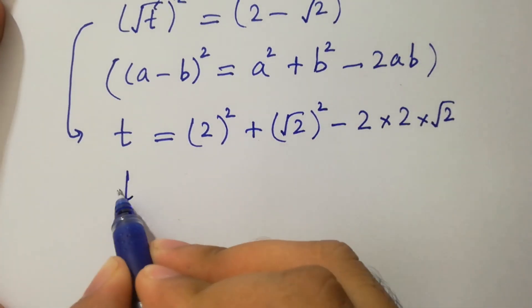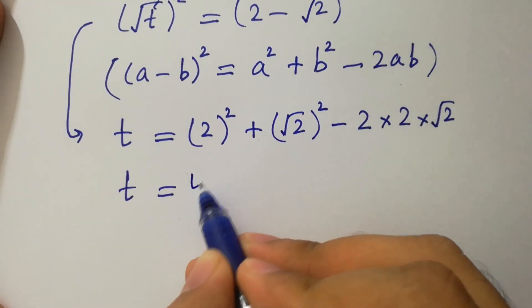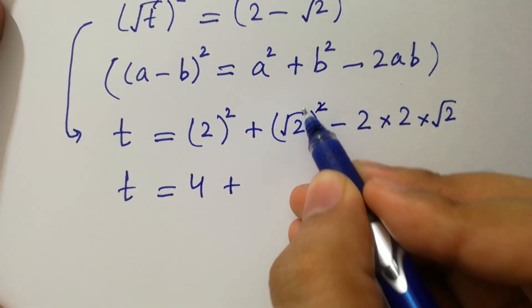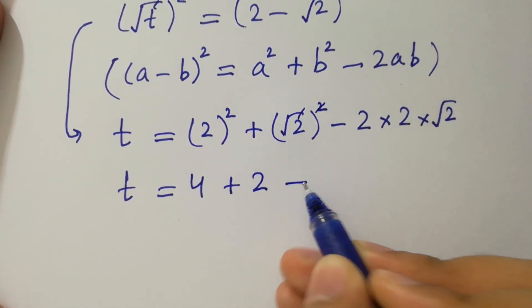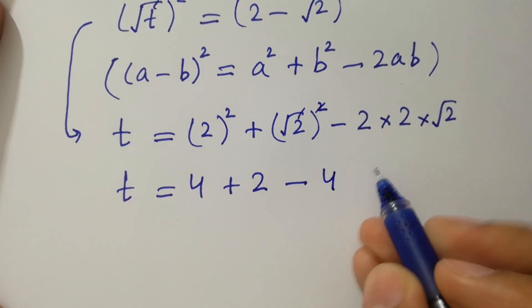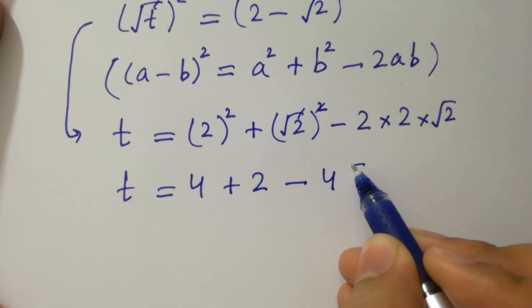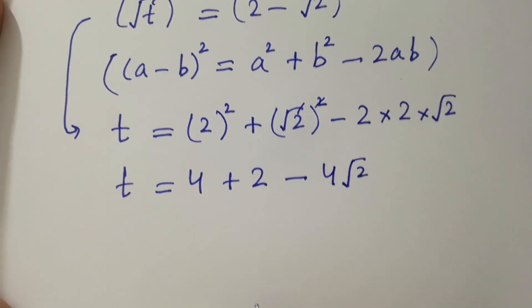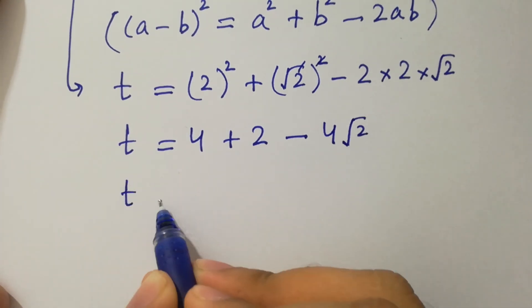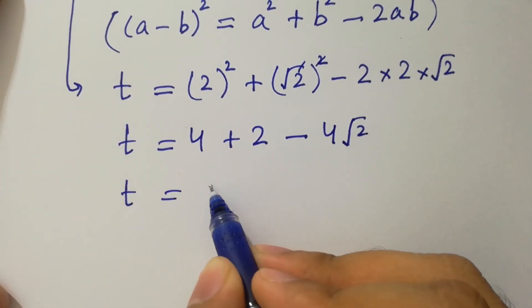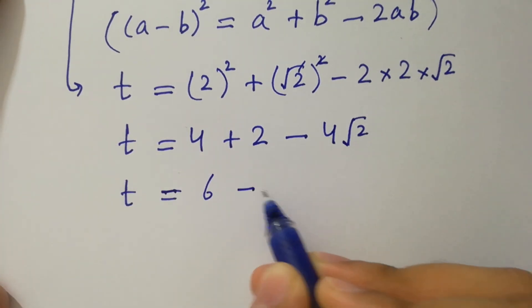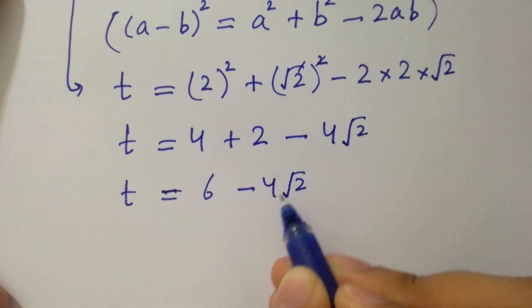We have t equal to: 2 times 2 is 4, plus the square cancels from square root of 2, minus 2 times 2 is 4 times square root of 2. So t equals 4 plus 2, which is 6, minus 4 square root of 2.